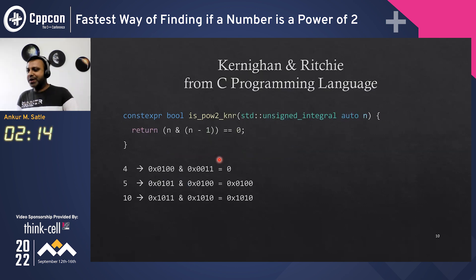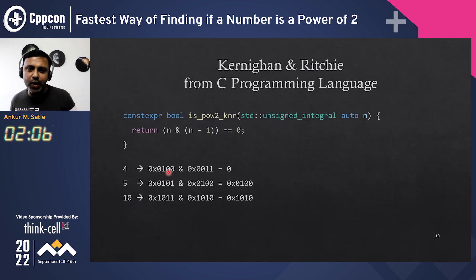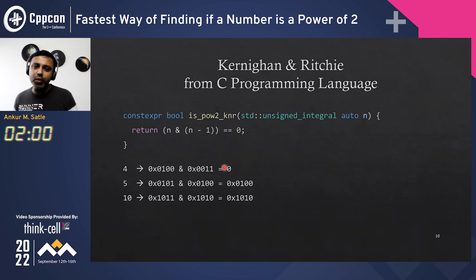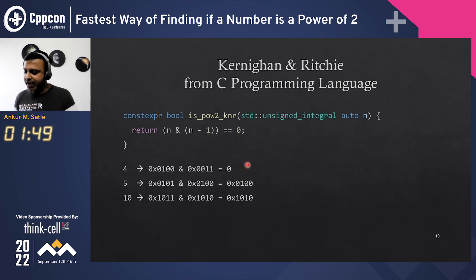Kernighan and Ritchie in their C Programming Language book came up with such a logic: this is true only for powers of two, where you just have one '1'. If you subtract one from it and AND it with the number, you will always get zero only for a power of two. For some other numbers it comes up with something which is not zero. So checking against zero is a way to find out — it's brilliant. You just need to know your numbers.